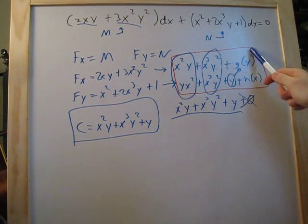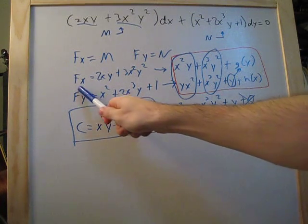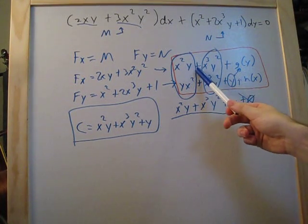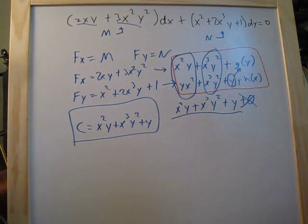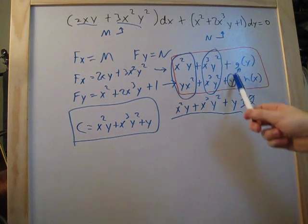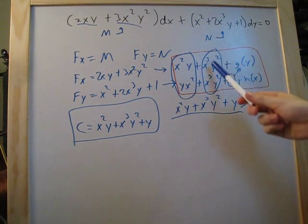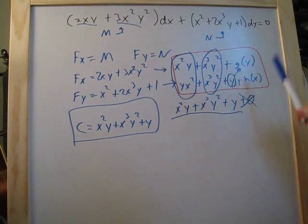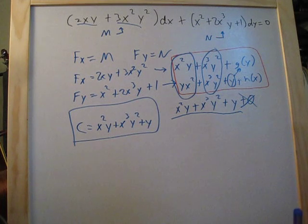When integrating, add h(x) to the result from integrating with respect to y, and add g(y) to the result from integrating with respect to x. Then determine what value of g(y) or h(x) makes the two integrated expressions exactly equal. Take whatever term is missing from either equation — here the y was missing from one side, so we added it. Once both equations match, that combined expression is your final equation, and you simply add the constant c to complete the solution.